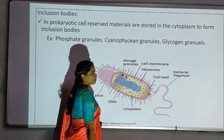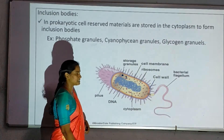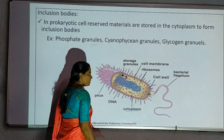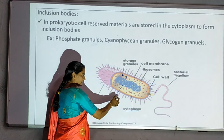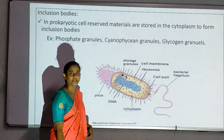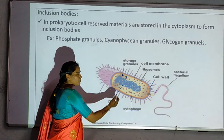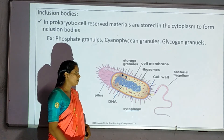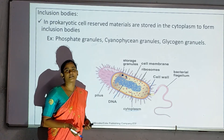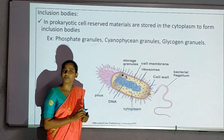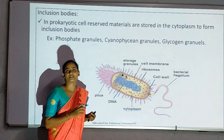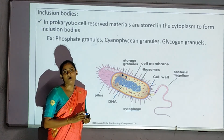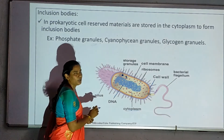Next, cytoplasm. The cytoplasm is a low-viscosity fluid matrix. It contains DNA material and genomic DNA. In a prokaryotic cell, there is no nuclear membrane. Prokaryotic cells do not have membrane-bound organelles such as endoplasmic reticulum. Only the cytoplasm is present with the genetic material.